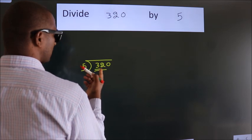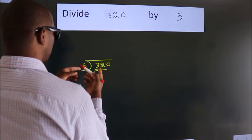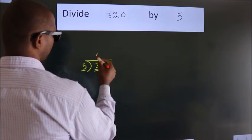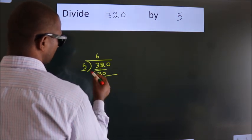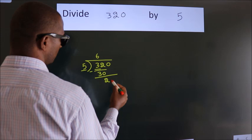A number close to 32 in 5 table is 5 times 6, 30. Now, we should subtract. We get 2.